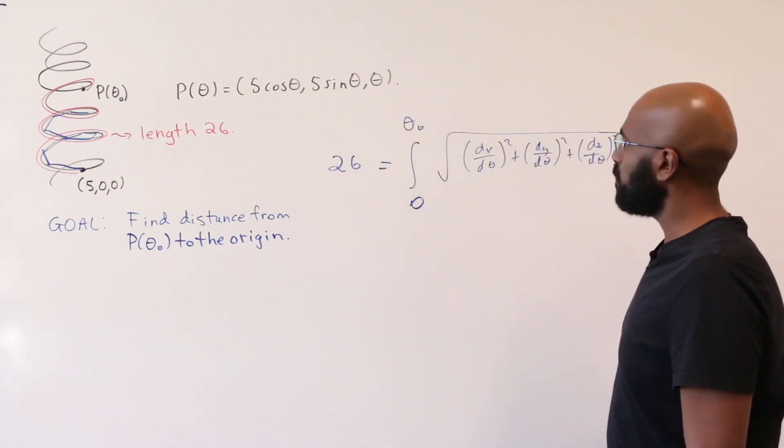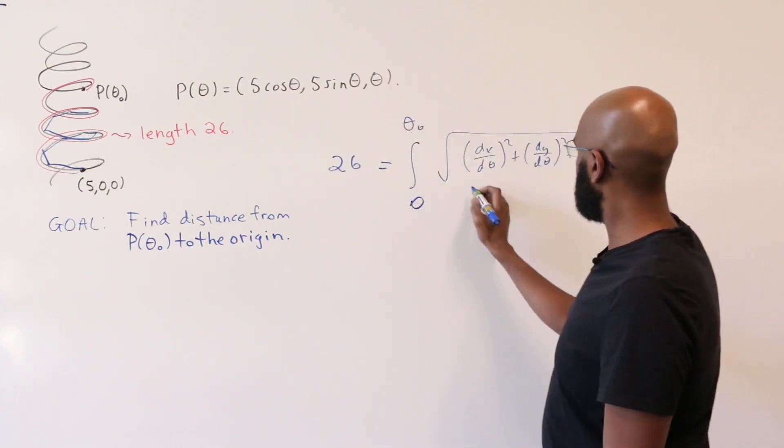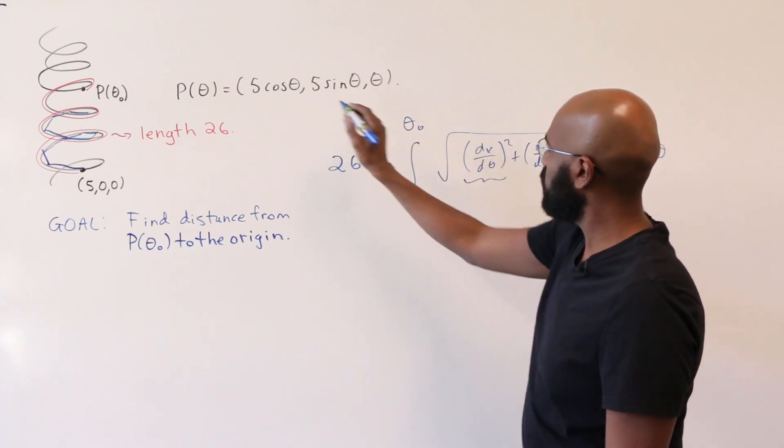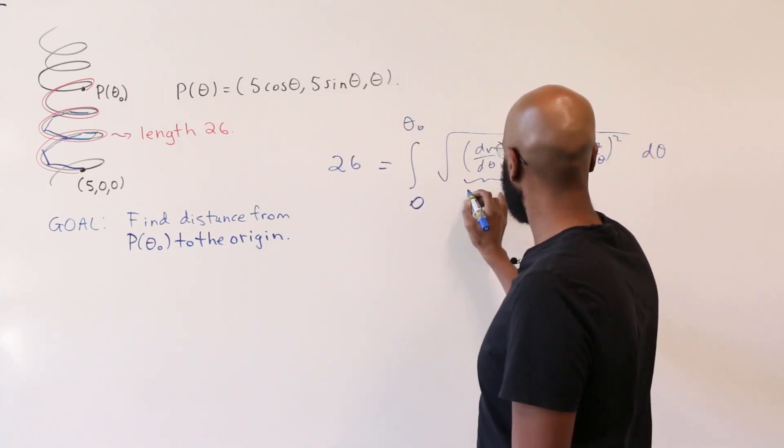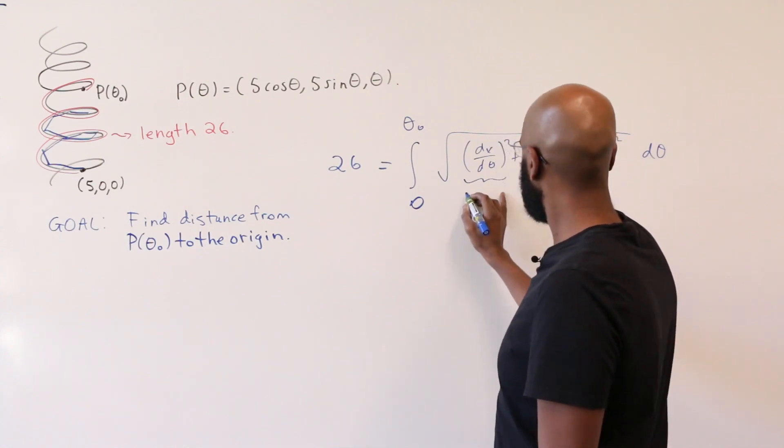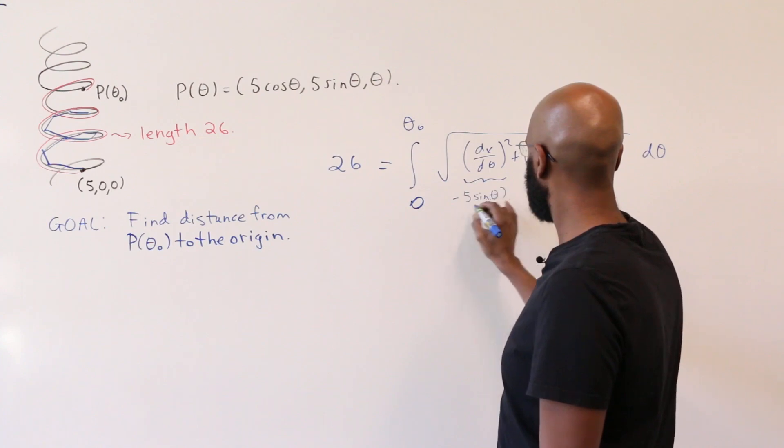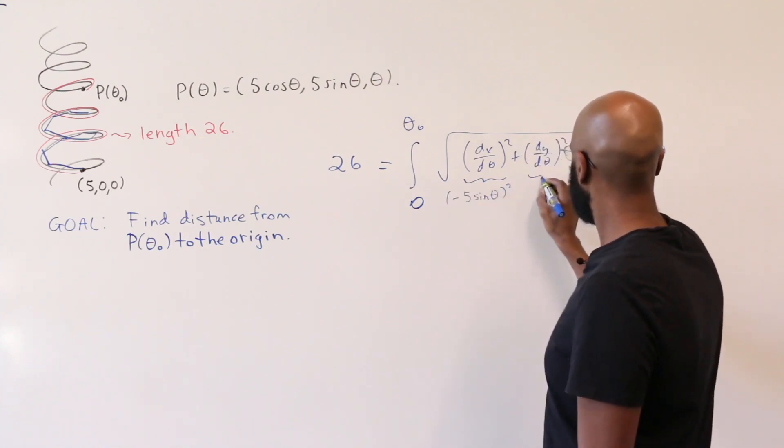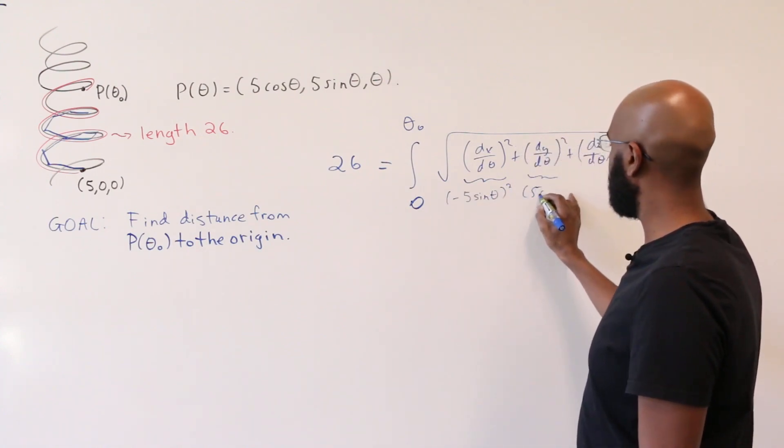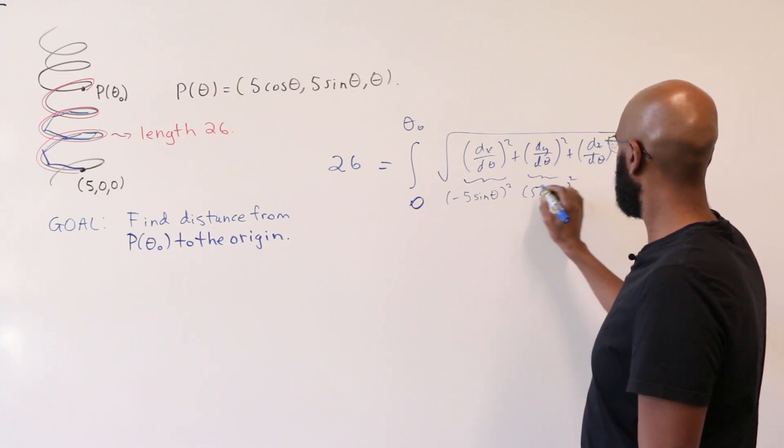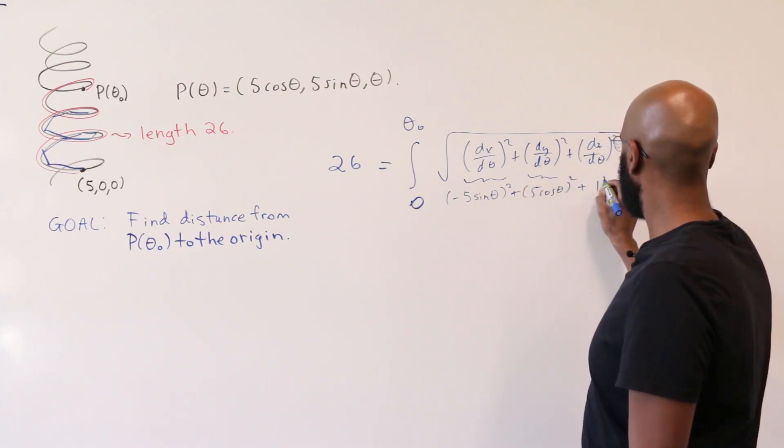Okay, so the derivative with respect to theta of the x coordinate is -5 cosine theta, so this is (-5 sine θ)². This thing is (5 cosine θ)², and here we have 1².